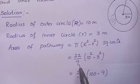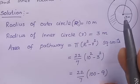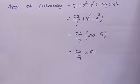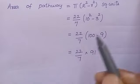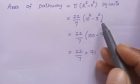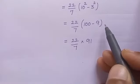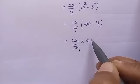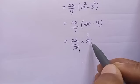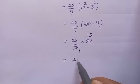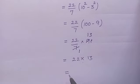The value of π is 22/7. Capital R equals 10, so R² is 10² = 100. Small r equals 3, so r² is 3² = 9. Subtracting: 100 minus 9 equals 91. Using the 7 times table to cancel: 91 divided by 7 gives 13. Then multiply 22 by 13, which equals 286 meter square.